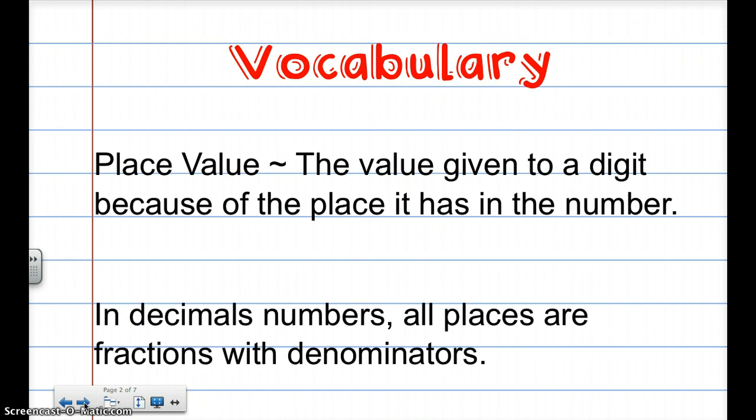Place value. So what is place value? Place value is the value given to a digit because of the place it has in the number. In decimal numbers, all places are fractions with denominators. So a decimal can always be converted to a fraction. And remember that the denominator for a decimal is always going to be in values of 10, either 10 or 100.